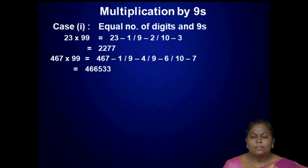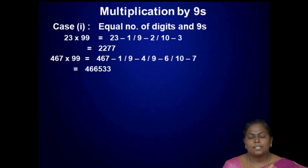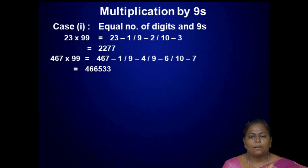Next, multiplication by nines. There are two cases. Case 1: equal number of digits and nines. For example, 23 into 99 — a two-digit number: reduce by 1 to get 22, then 9 minus 2 is 7, 10 minus 3 is 7. So 2277.